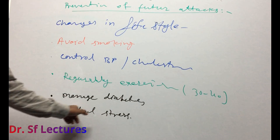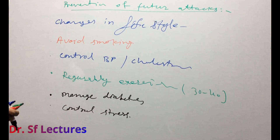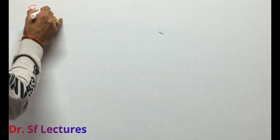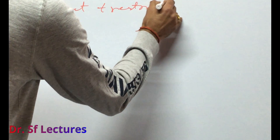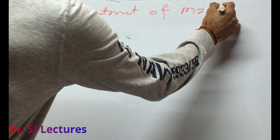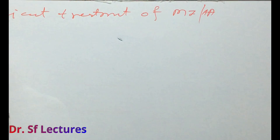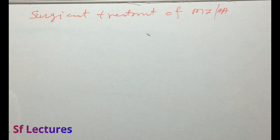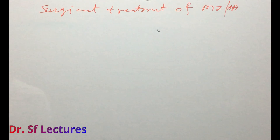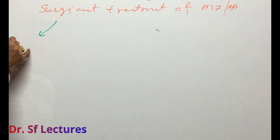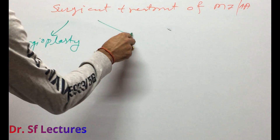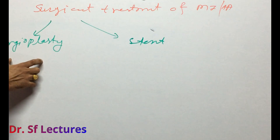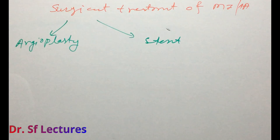Now let's talk about the surgical treatment of myocardial infarction or heart attack. In surgical treatment there are two types: first is angioplasty, and second is stent. In angioplasty, the cardiac surgeon will remove the clot from the coronary artery.